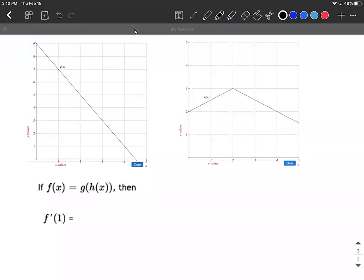Okay, on this problem we're given two functions named g(x) and h(x). We're told that f(x) is defined to be g composed with h(x). So what that means is h(x) is being plugged into g(x).